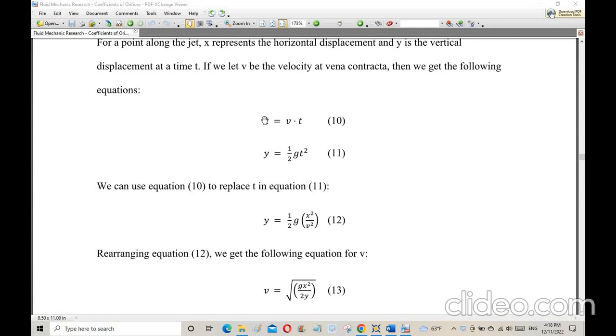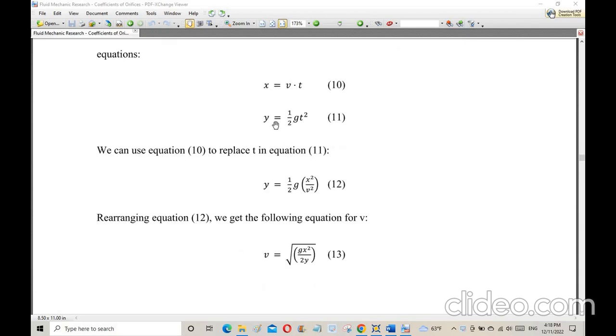From the first equation, we note that t equals x divided by v. We replace t with x over v and get y equals 1/2 times g times x squared over v squared.